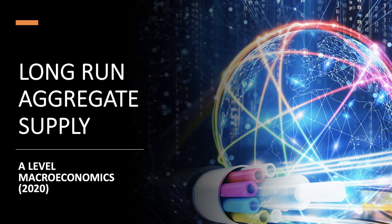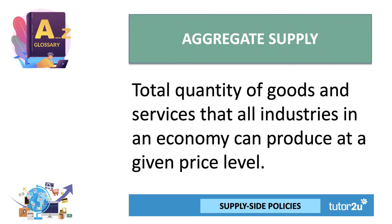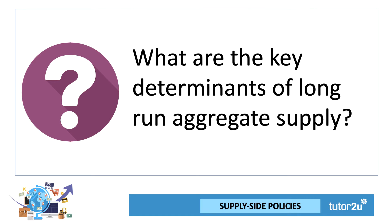Hi there and welcome to a new video. For those of you studying supply side economics, here's a revision video looking at some of the key factors that can shape and determine a country's long-term aggregate supply. The best definition of aggregate supply is probably the total quantity of different goods and services that all industries in an economy can produce at a given price level — the aggregate supply side potential of a country across industries from manufacturing to housing to transport to healthcare to retail.